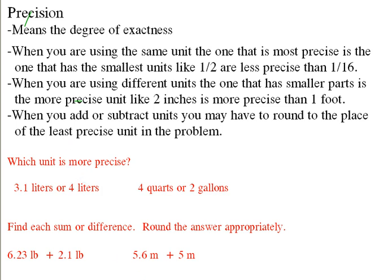So this here is, if we look here, which unit is more precise, 3.1 liters or 4 liters? Well, 3.1 liters or 4 liters? Well, we just look, the units are the same. So all we do is we say, okay, well, now we're just looking to see which one has the smallest units or smallest parts of a unit here. And this is 0.1 of a full unit, and this is just 4 full units. So this one over here is going to be more precise for that reason.